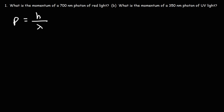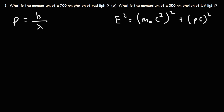For those of you who want to see the derivation for the formula, it starts from this equation: E squared is equal to the rest mass of a photon times c squared, squared, plus the momentum times c squared. Now a photon is defined as not having any rest mass, so this term is zero. It does have effective mass, but not any rest mass.